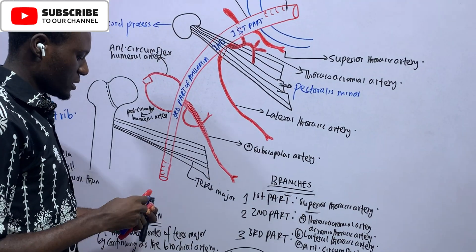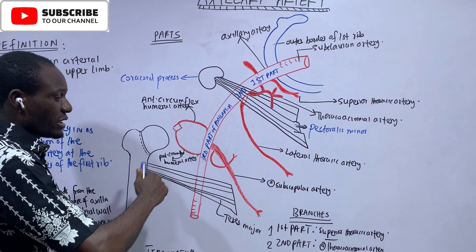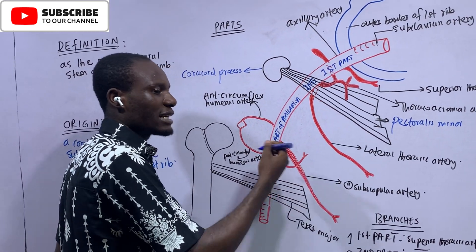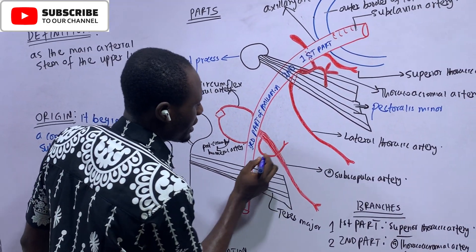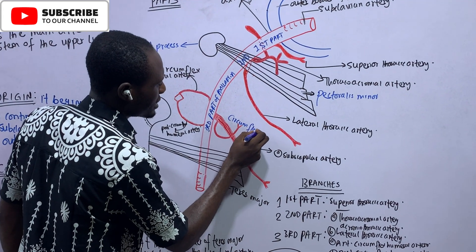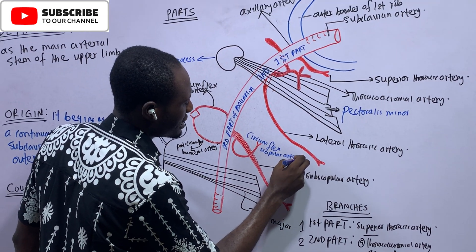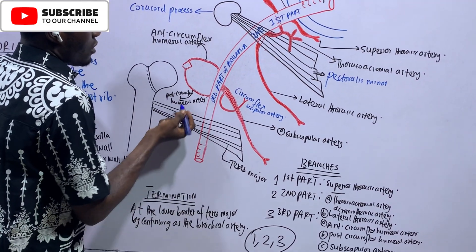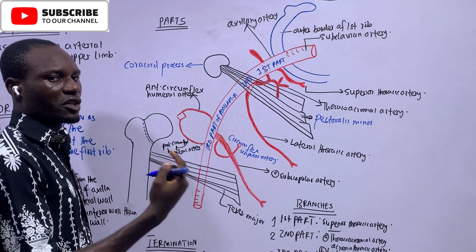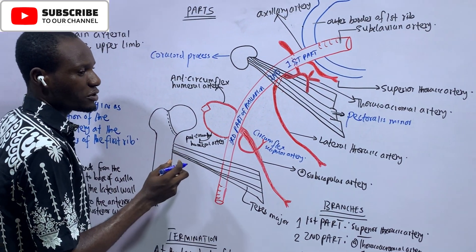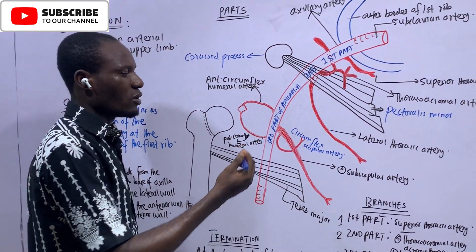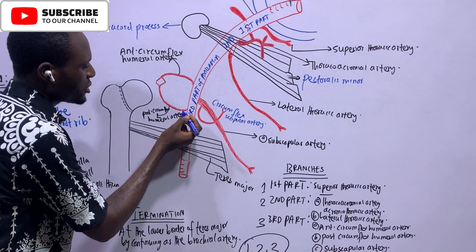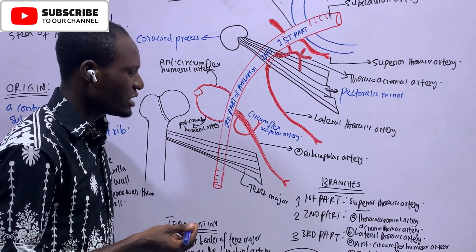Some more notes on these arteries, beginning with the third part. The largest branch of the third part is the subscapular artery, which gives rise to the circumflex scapular artery — an artery that winds around the lateral border of the scapula. The circumflex scapular artery passes through the triangular space. The anterior circumflex humeral artery winds around the anterior aspect of the surgical neck and anastomoses with the posterior circumflex humeral artery. The posterior circumflex humeral artery winds around the posterior aspect of the surgical neck. When there is a fracture of the surgical neck, these two arteries are liable to damage.